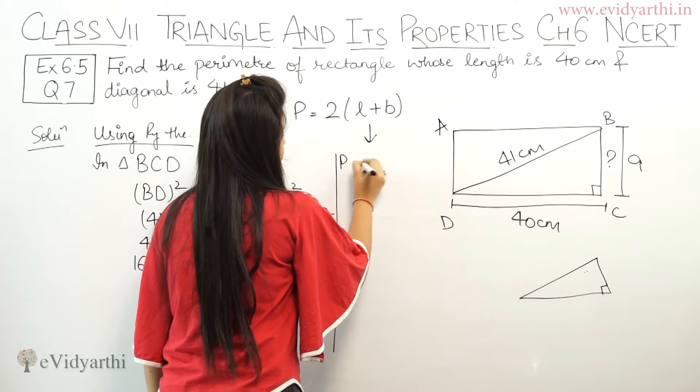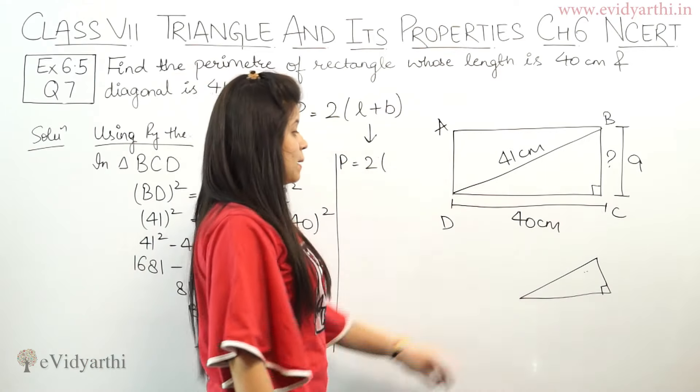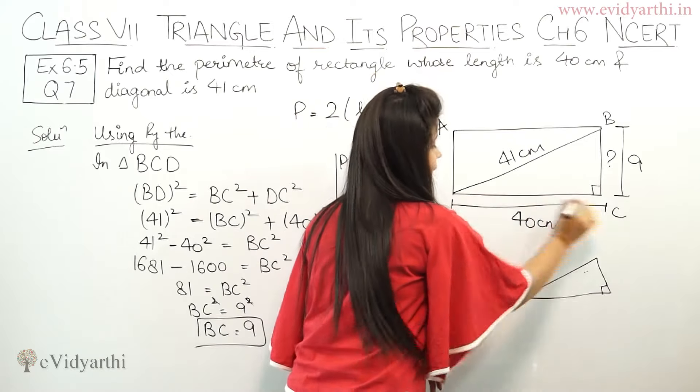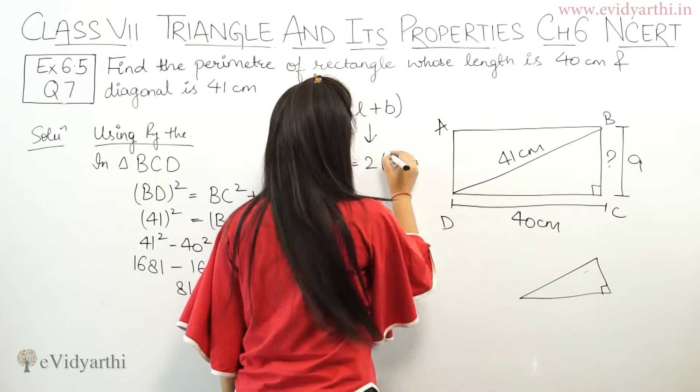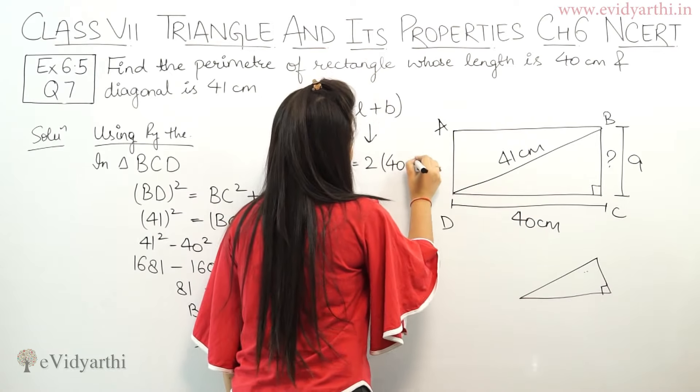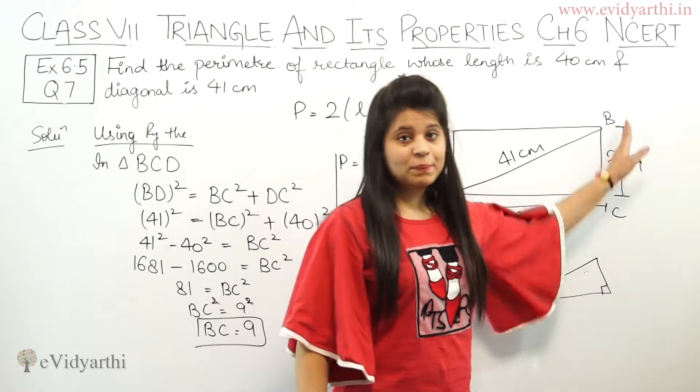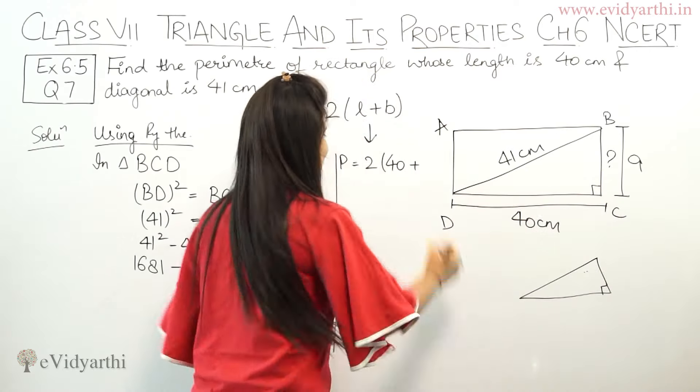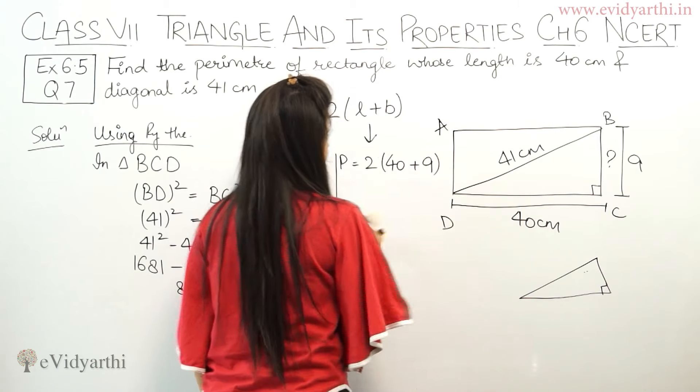Now what is L? Length is 40 centimeter, so this is 40 plus breadth, which we just found is 9. So this is 9.